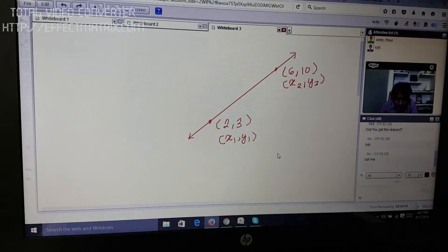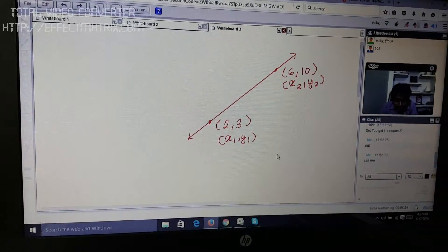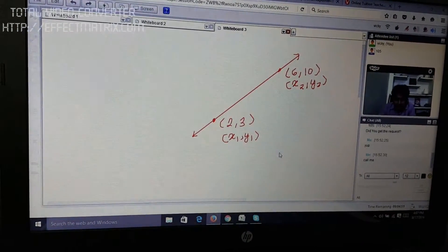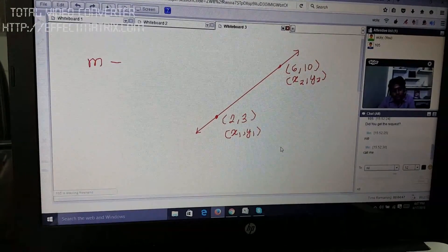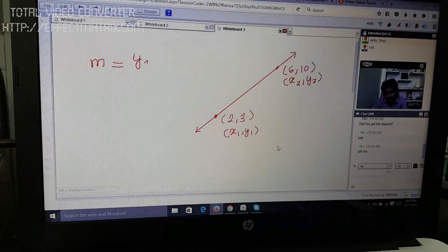It says that the class will expire in five minutes. Okay, let me just minimize it. And now, if you wish to get the value of slope, you simply have to apply the formula y2 minus y1.